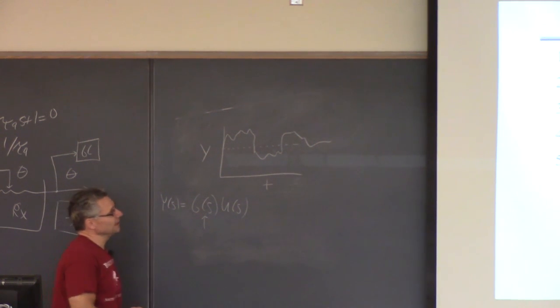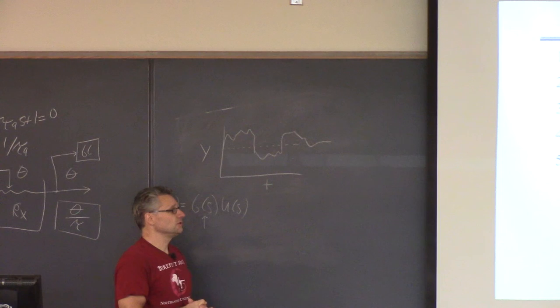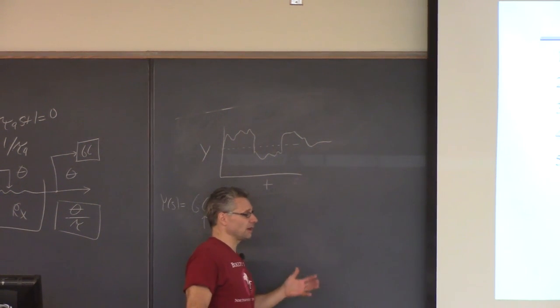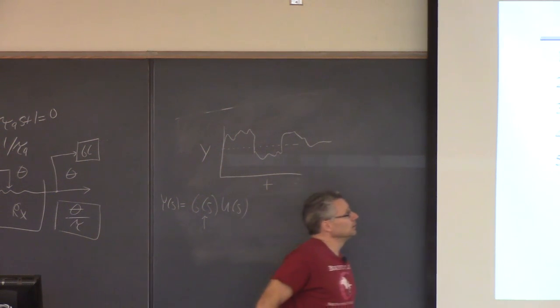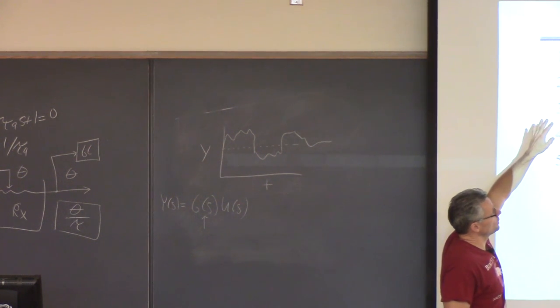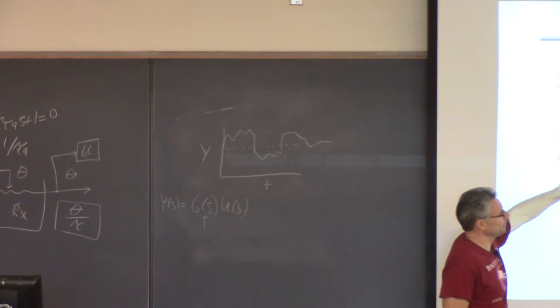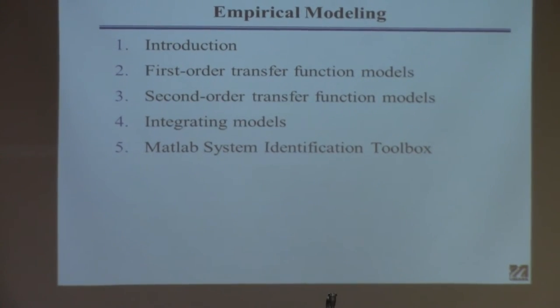So what they do in industry a lot for things that are complex like that is they find data, and then they find the model. So what you've done is you've found the model, and then you can predict or simulate what happens to the process. Another approach, which is more commonly used if things are complex, is you collect data, and then you figure out a model from the data directly. It's called empirical modeling. And so what I'm going to do is give you a little background to this. This is a very important problem in the industry, and I'm pretty sure every one of you will encounter this if you're a process engineer or a control engineer. So I'm going to give you some background on this. I'll talk about how to find the transfer functions that we have focused on, which is first order and second order, and also integrating. And then I'll talk a little bit about this. We don't actually use this. I just want to mention there's a toolkit available in MATLAB that does all the stuff we talk about and much more.